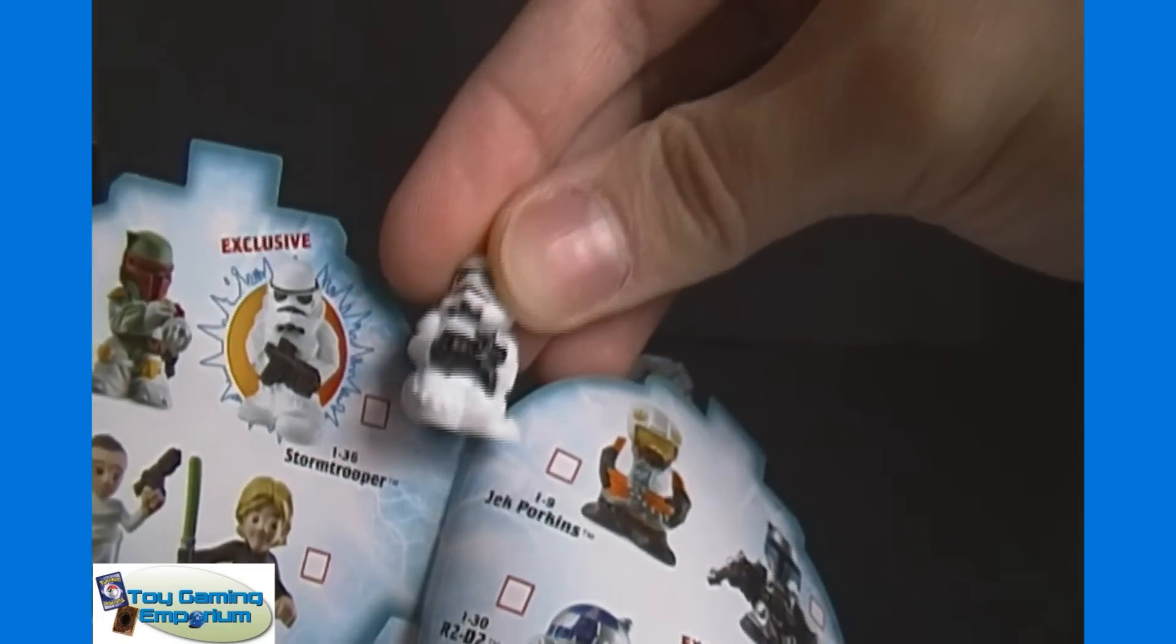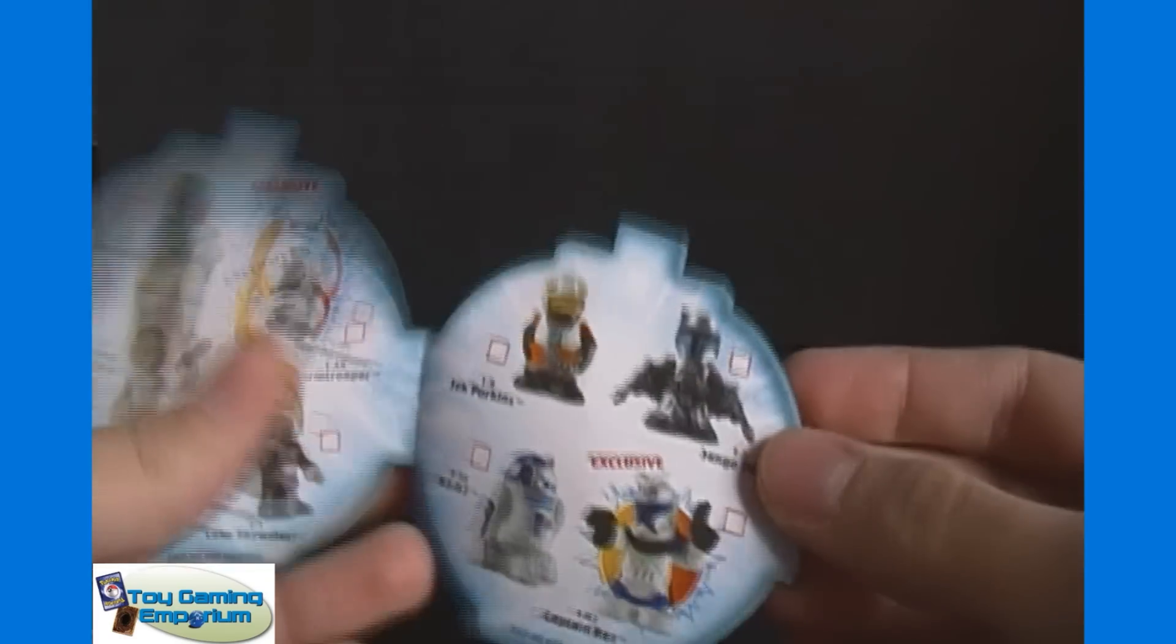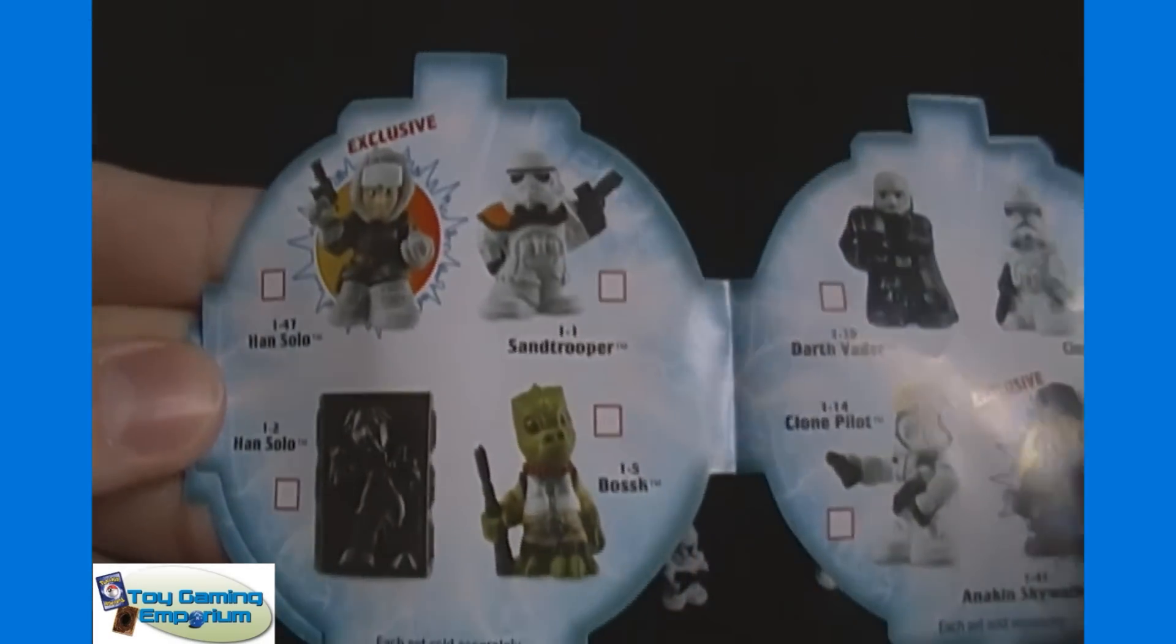1-36 Storm Trooper. This looks like a clone trooper. We'll see in a second here though. Let's kind of go through this quickly here. Best I can. Show you all the different ones there are.